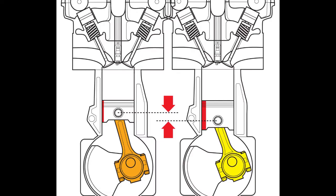It all depends on what engine we are working on and how much we can change the rod stroke ratio given the constraints of that engine. A shorter rod stroke ratio will also increase the wear we see on the cylinder walls. Along with faster acceleration of the piston from top dead center, this will also improve the engine's breathing at lower RPMs.